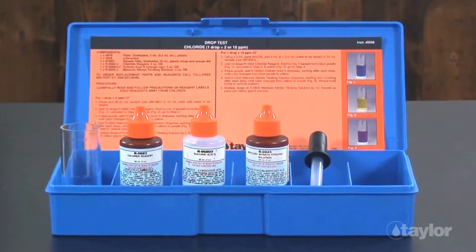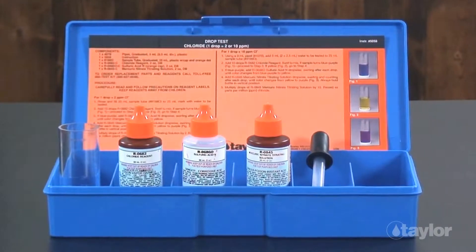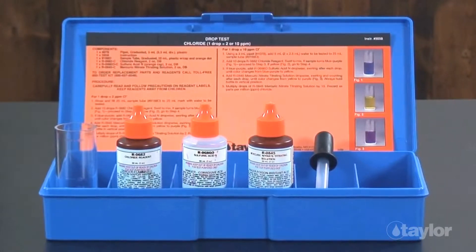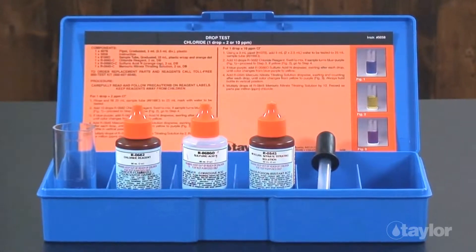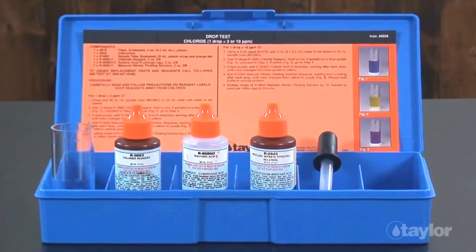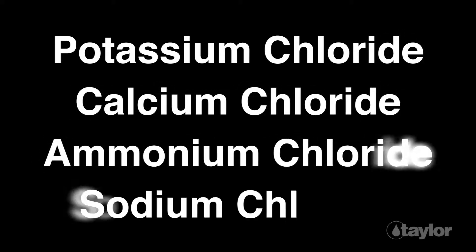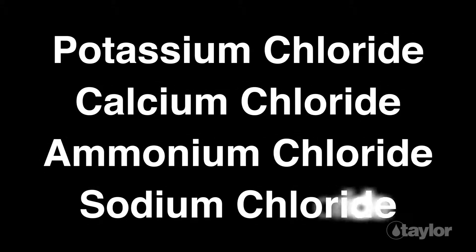Chlorides are salts that are produced when the gas chlorine is combined with a metal. Potassium chloride, calcium chloride, and sodium chloride — table salt — are examples of chloride salts.